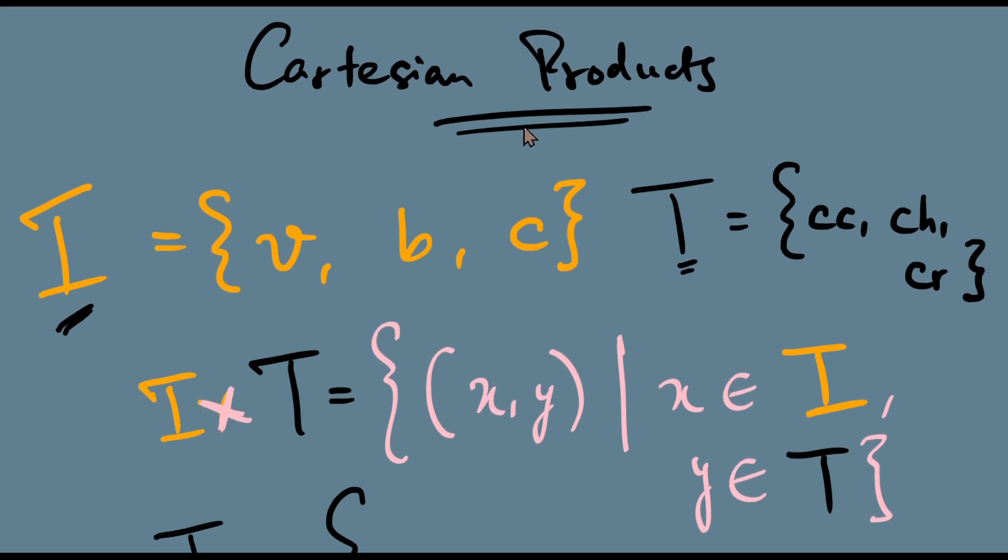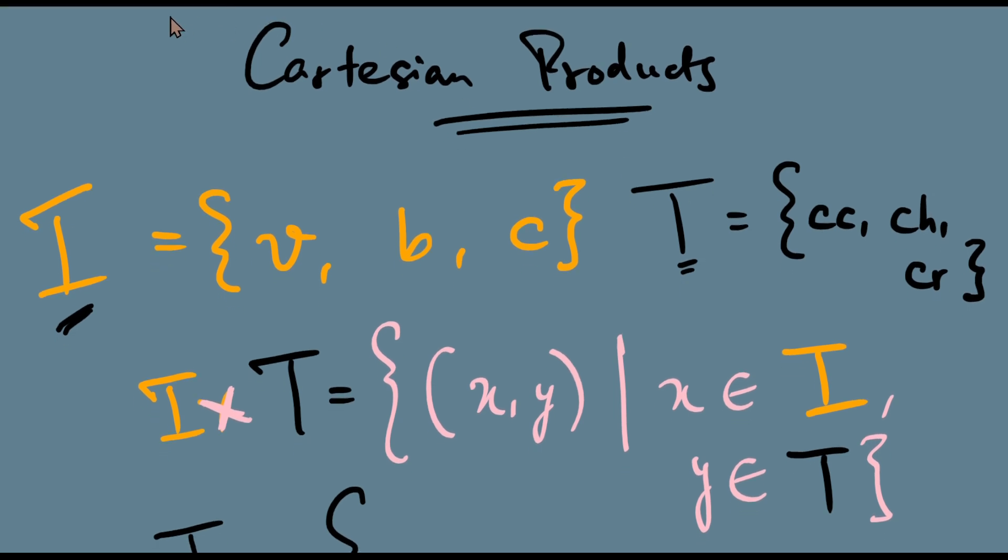So I cross T is the set of all ordered pairs where the first element is taken from I and the second element is taken from T. A brief review of ordered pairs: an ordered pair is just a pair written as something comma something. They may be numbers, real numbers, variables, etc. And they are ordered because (a,b) is not equal to (b,a). If we change the order, we actually change the pair itself.